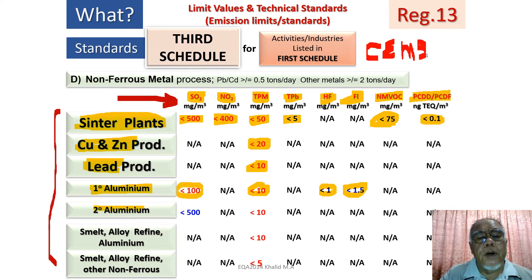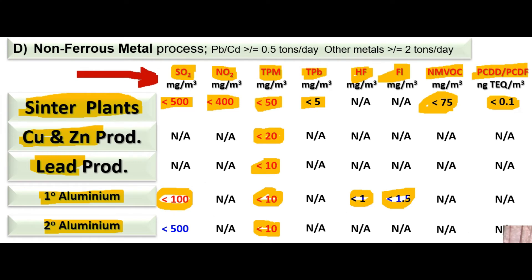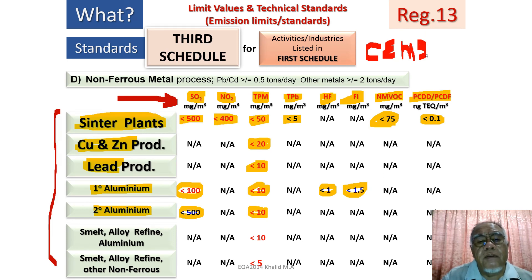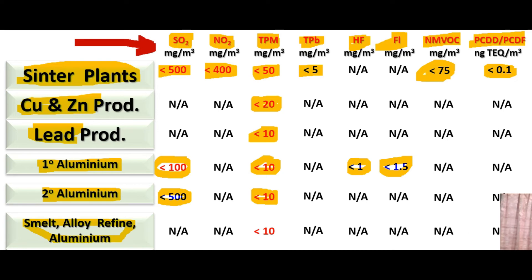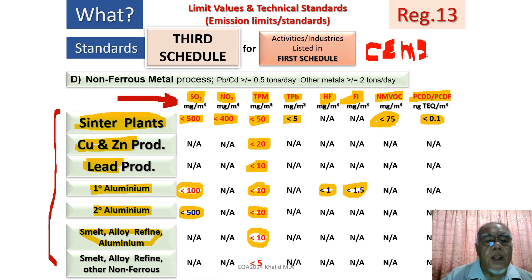For secondary aluminium production, the environmental parameter of concern is total particulate matter, and for sulfur dioxide, CEMS is not required — they can do this by using normal isokinetic stack sampling once a year. For smelting, alloy refining of aluminium, only total particulate matter is required and that requires CEMS. Smelting, alloy refining and other non-ferrous metals also only require CEMS for the continuous measurement of total particulate matter.